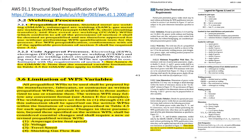The welding parameters set forth in this section shall be specified in the written WPSs within the limitations of variables prescribed in Table 4.5 for each applicable process. Changes in these parameters beyond those specified in the written WPSs shall be considered essential changes and shall require a new or revised pre-qualified written WPS — changes outside of the amperage range, the voltage, the travel speed, shielding, gas flow rate, and other parameters.